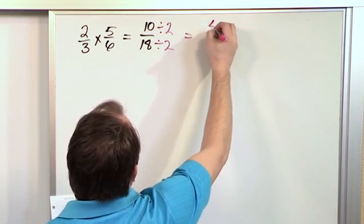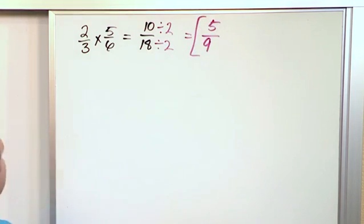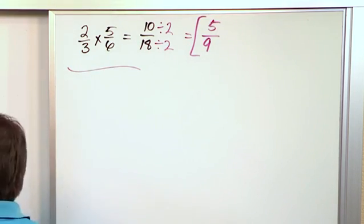10 divided by 2 is 5. 18 divided by 2 is 9. So the answer is 5/9. That's fully simplified. Nothing else you can really do to that particular problem.